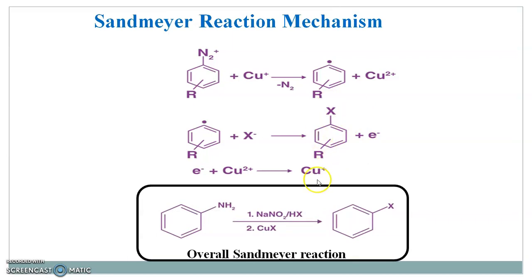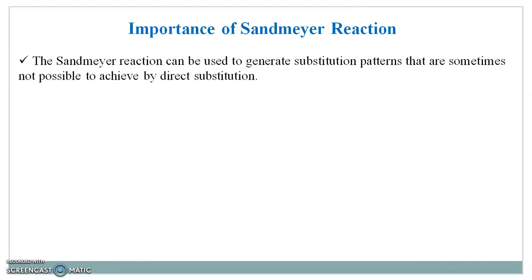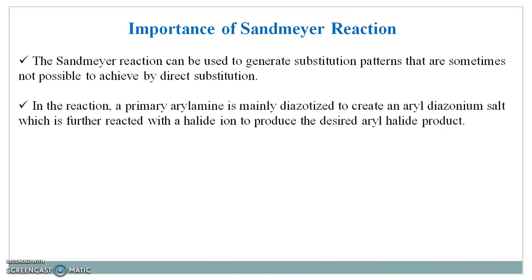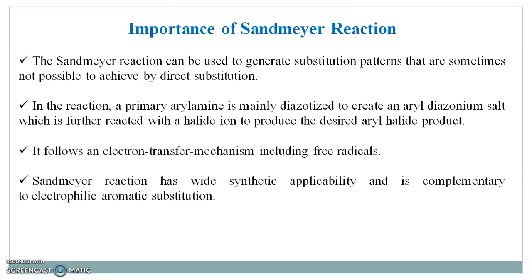Here is the overall Sandmeyer reaction. The Sandmeyer reaction can be used to generate substitution patterns that are sometimes not possible to achieve by direct substitution. In the reaction, a primary aryl amine is diazotized to create an aryl diazonium salt, which is further reacted with a halide ion to produce the desired aryl halide product. It follows an electron transfer mechanism including free radicals. The Sandmeyer reaction has wide synthetic applicability and is complementary to electrophilic aromatic substitution.